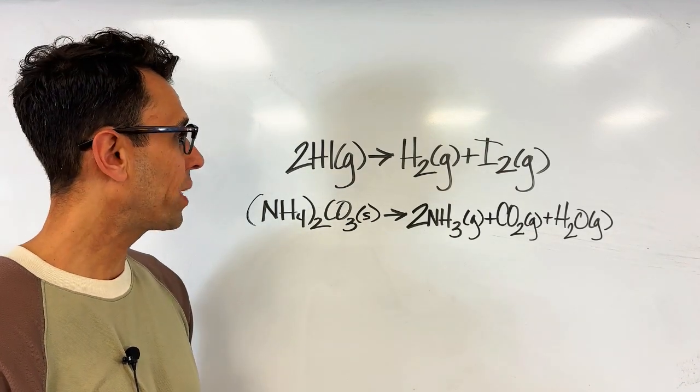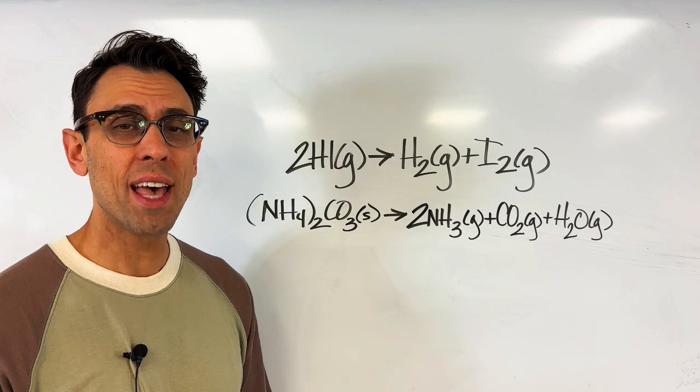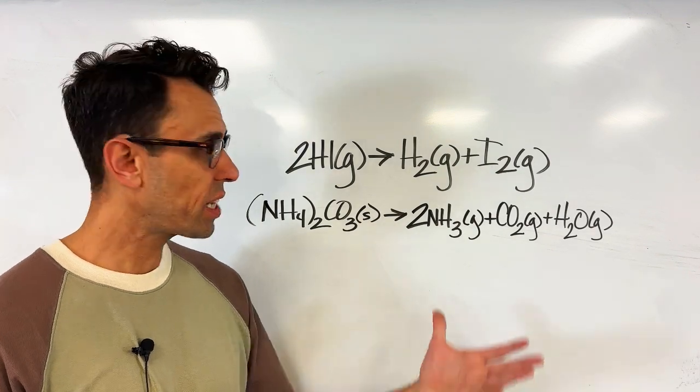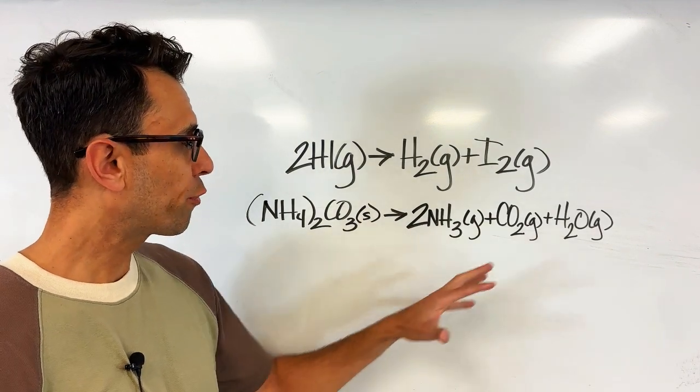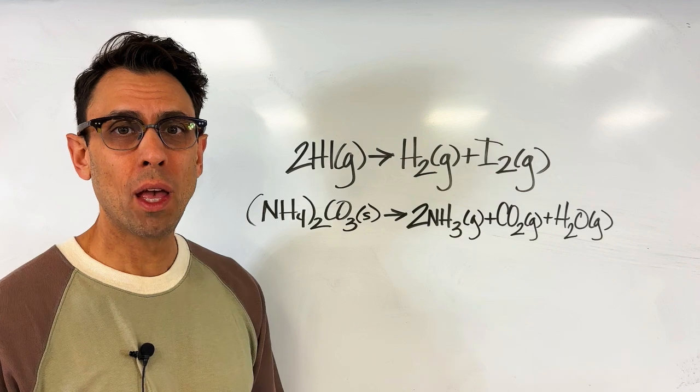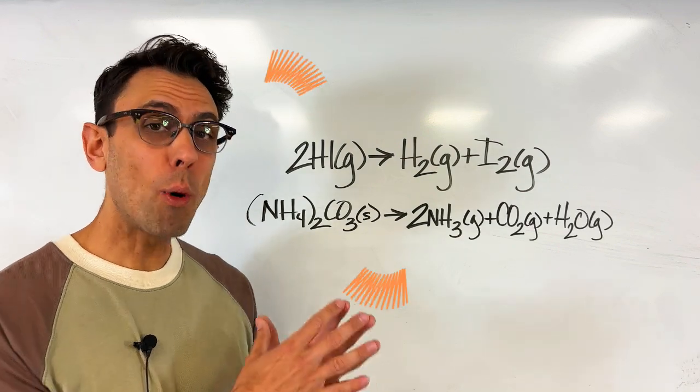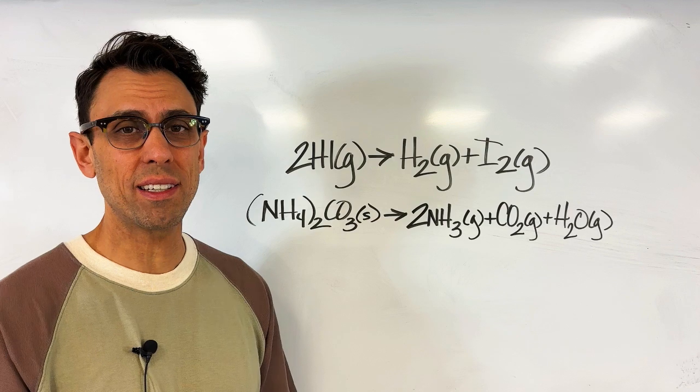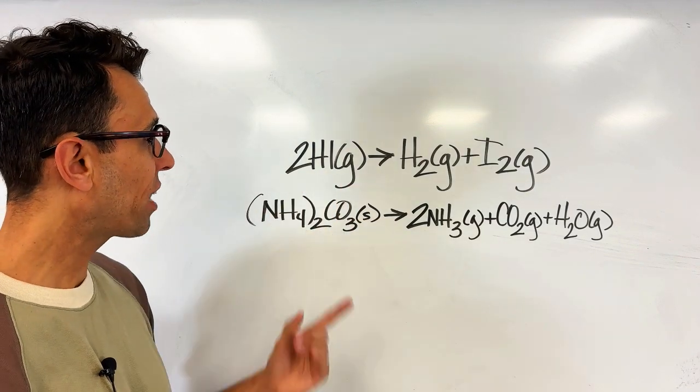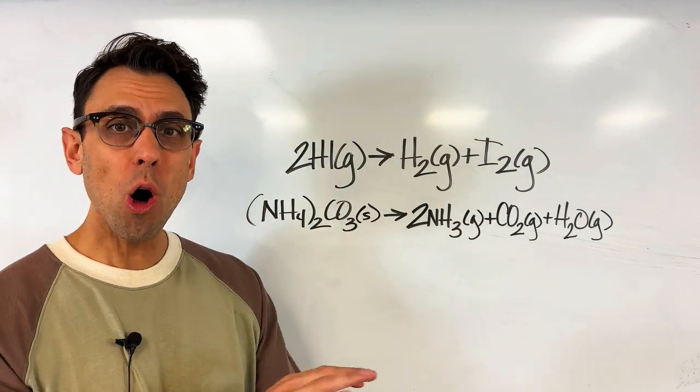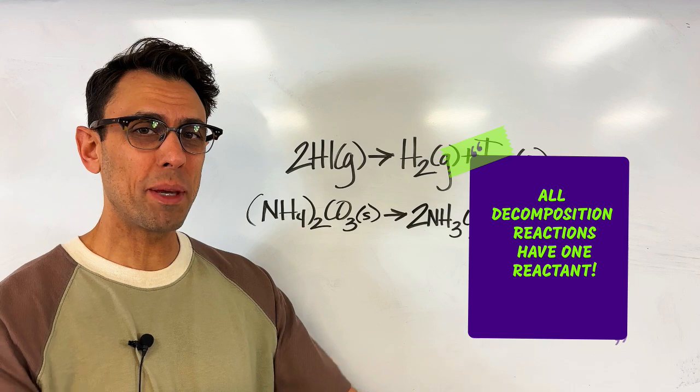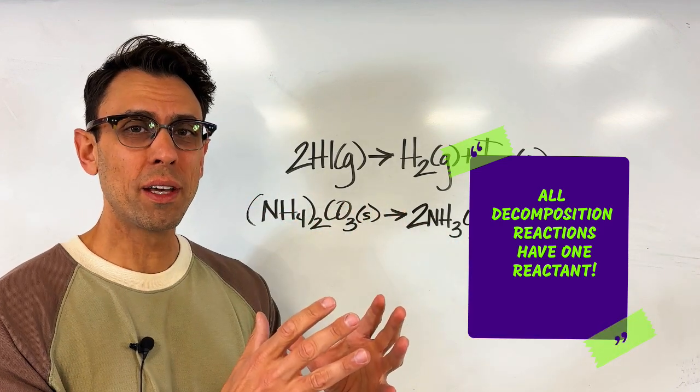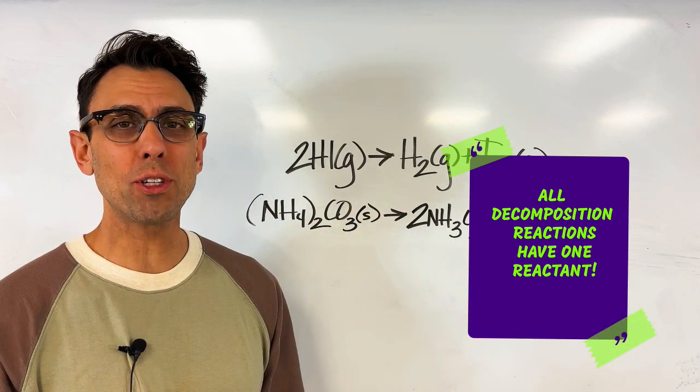Well behind me I have two examples of decomposition reactions. And as you inspect them, take a look and look for common things between them. I think you'll agree with me that what both of these have in common is one single reactant. Just one thing on the left side of the arrow. All decomposition reactions are going to begin with one compound and then we're going to look at how it breaks apart.